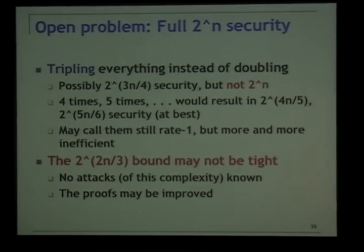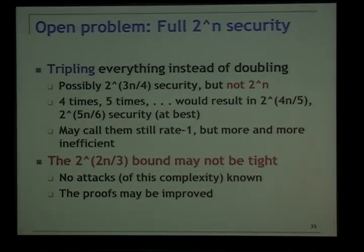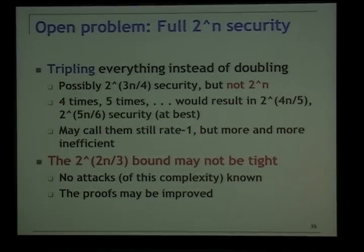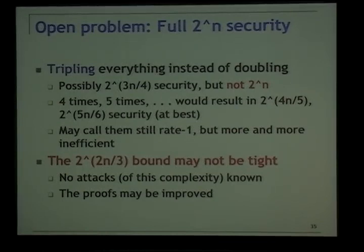Another open problem: the security bound is 2^(2n/3). One idea is to triple everything instead of doubling, but that only gives 2^(3n/4) at best, and doing it four or five times still doesn't give 2^n security, while producing a very large state size. Also, the bound may not be tight — we don't know of any attacks that break our scheme at the current proven complexity, so the proof may be improvable.